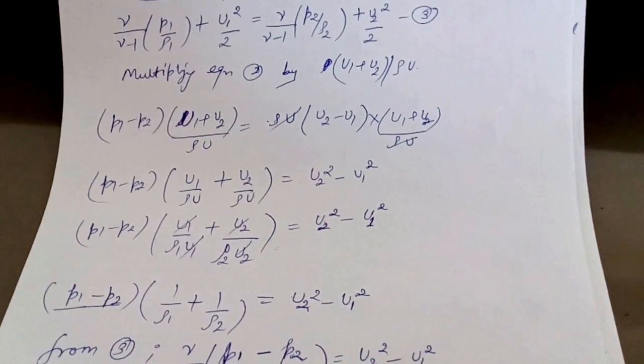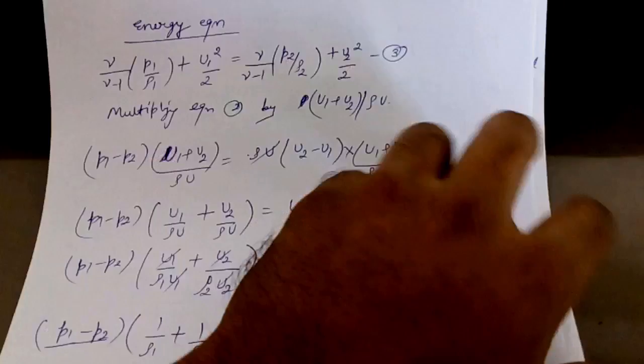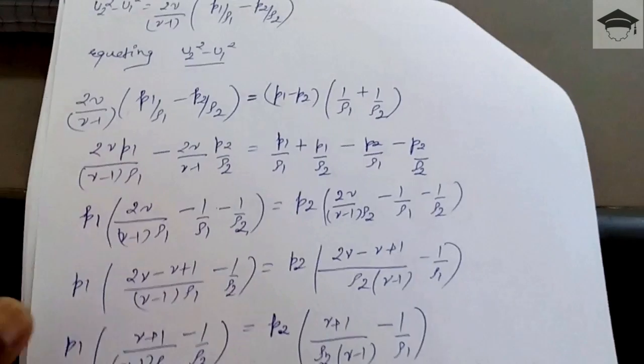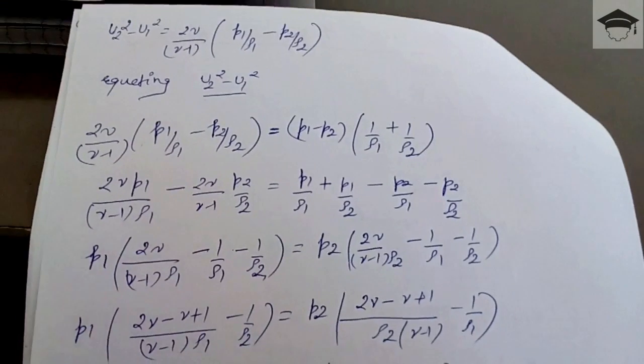So we will get 2γ/(γ-1) × (p1/ρ1 - p2/ρ2) = (p1-p2) × (1/ρ1 + 1/ρ2). You have to solve, take p1 terms on one side and p2 terms on the other side.